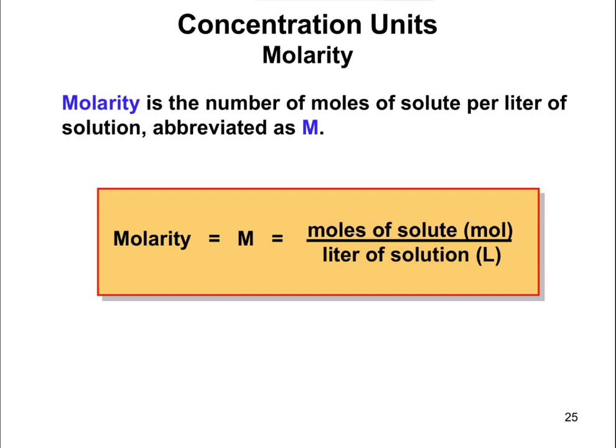We're going to talk about molarity here, even though for a lot of you, you probably won't see it a whole lot. Molarity is simply defined as moles per liter, abbreviated with a capital M. Anytime you have something per something like this, that means you have a conversion factor. If you know the number of moles and the molarity, you can figure out the liters. If you know the volume and the molarity, you can figure out how many moles you have.